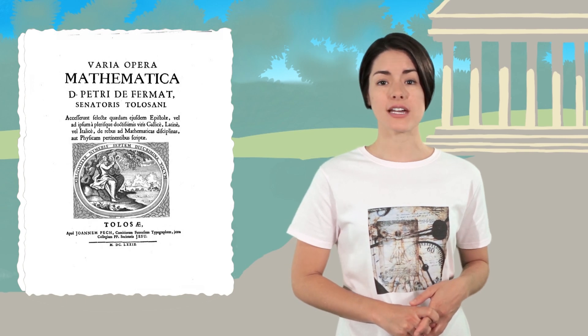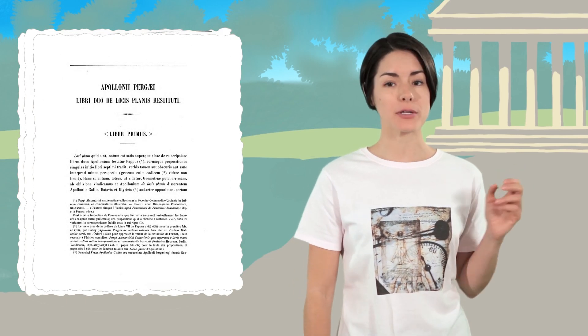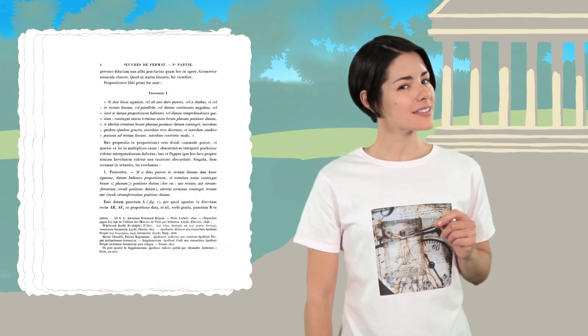Fermat's knowledge of languages and mathematics was critical to one of his interests, the restoration of ancient books. One of his reconstructions was the ancient book Plain Loci by Apollonius. But Fermat did not stop there.